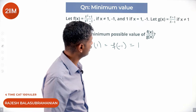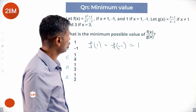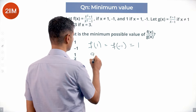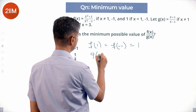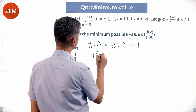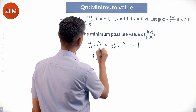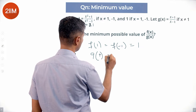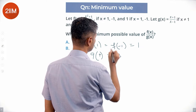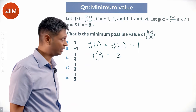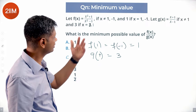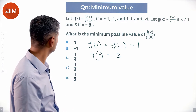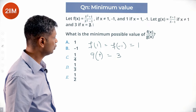g(x) = (x + 1)/(x - 1) for x not equal to 1, and g(1) = 3. So g(1) is 3; otherwise it is that expression.